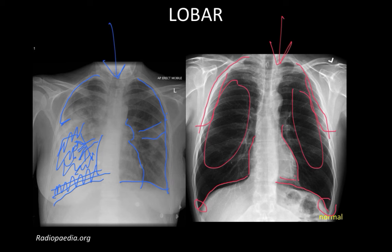Another question to consider is whether this is all consolidation or whether there is also an effusion. A chest x-ray can't tell you if there is an infiltrate alone or an infiltrate with an effusion, unless you see something called the meniscus sign — a really clean, sharp, fluid layering level. It's not visible most of the time, so you don't really know if this area is just consolidation or if there is an effusion in addition to the consolidation, not by chest x-ray alone.